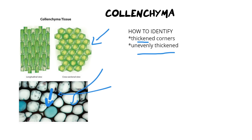As for the function of phloem: it transports sugars, and it is a two-way movement. Sugars go from the roots to the shoots, but they must also be able to go from the leaves — where they're ultimately made — down to the roots to be stored later. That two-way movement is another defining difference between xylem and phloem.